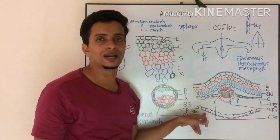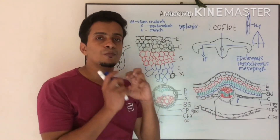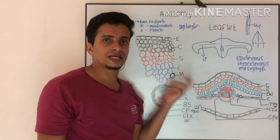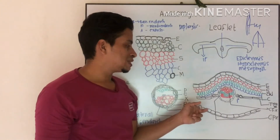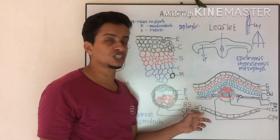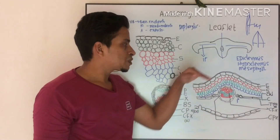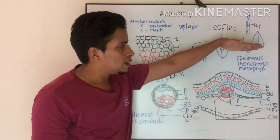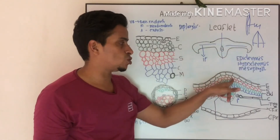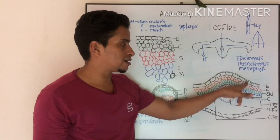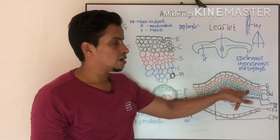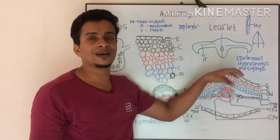Upper epidermis and lower epidermis are both well protected by a cuticle. On the lower side, you can see the presence of deeply sunken stomata. The hypodermis is differentiated into an outer sclerenchymatous zone, represented in red, followed by a chlorenchymatous zone.